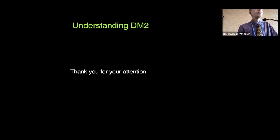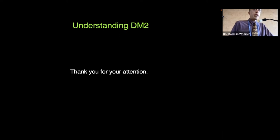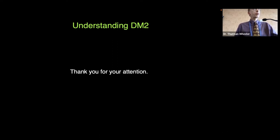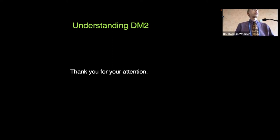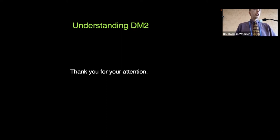Q: Does the repeat expansion in DM2 cause a gain of function similar to DM1, or is it a loss of function of the CNBP, or a mixture? A: The best evidence right now suggests it is a gain of function, very similar to DM1. It's interesting that the cause is a repeat expansion in the same way as DM1 — a different repeat and a different gene, but still a repeat expansion. The CCTG accumulates in the nuclei of cells, just as the DM1 expansion does, and causes many of the same clinical features, probably through the exact same gain-of-function mechanism.